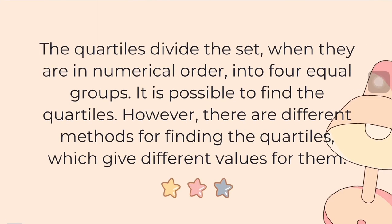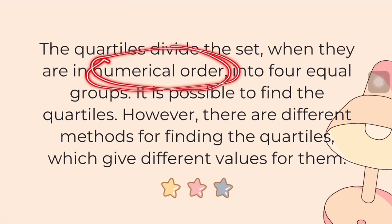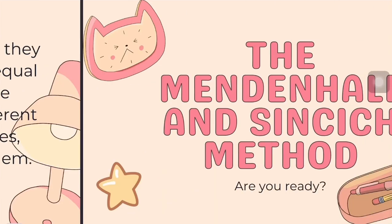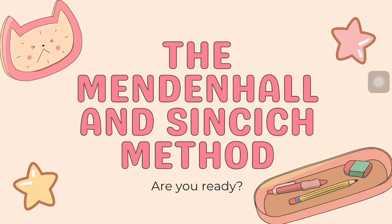The quartiles divide the set, when arranged in numerical order, into four equal groups. There are different methods for finding the quartiles which give different values. We will use the Mendenhall and Sankich method. Let's start.